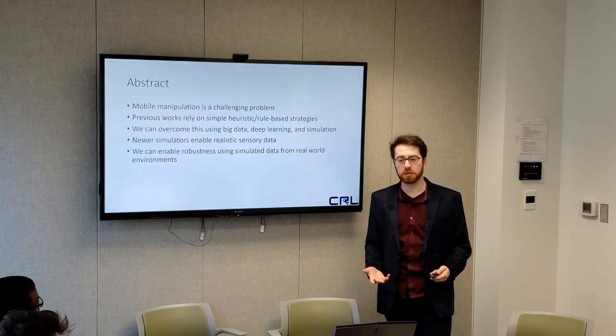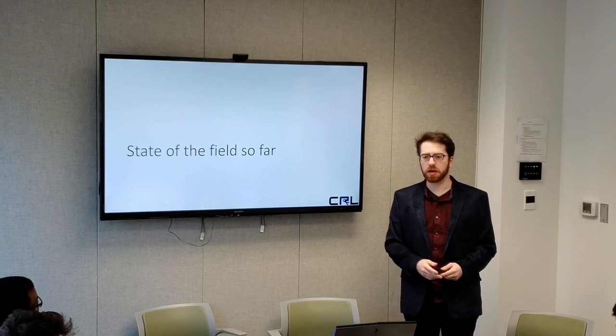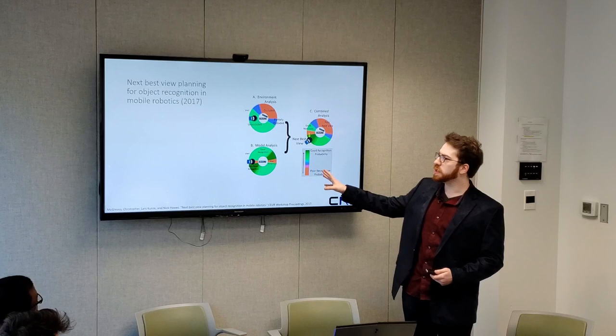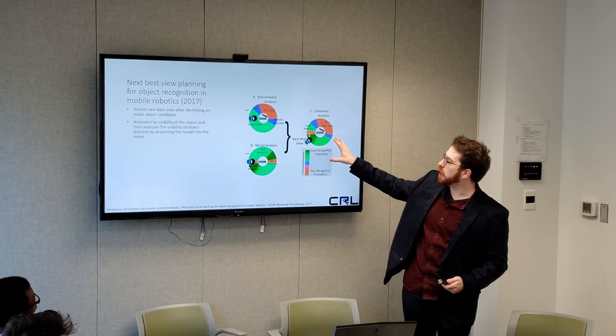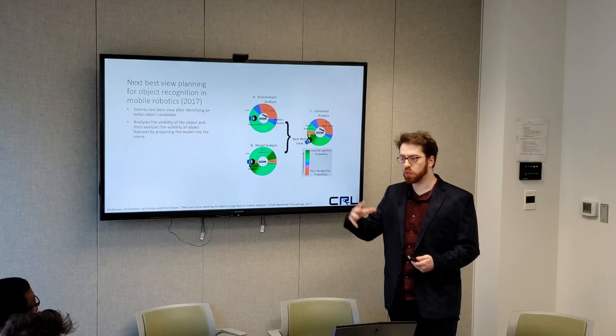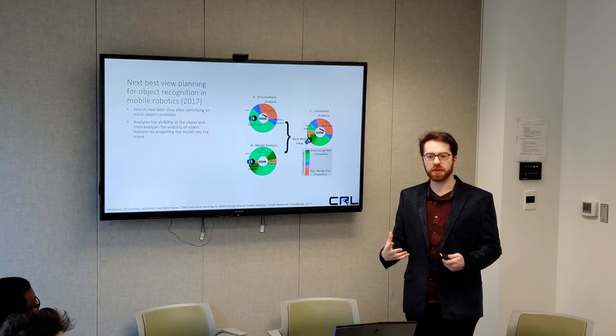Through this large amount of real-world data captured in simulation, we can enable robustness in these deep learning algorithms for mobile manipulation. First off, I want to talk about where are we at right now, who are the major players, and what are they using? One recent work in 2017 was looking at how we can do next best view of object recognition using a mobile manipulator by capturing an initial view of an object, getting an object candidate, and based on its initial assumption of what the object is, finding the next best view to help the agent identify it.